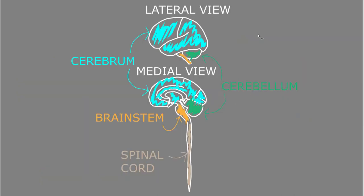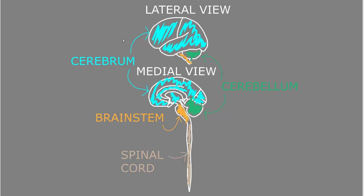The brain is divided into three main parts: the cerebrum, the brainstem, and the cerebellum. Looking at the brain in a lateral view, the cerebrum is the main, largest part on top. Under it is the brainstem anteriorly and the cerebellum posteriorly. This can be seen even better in a medial view — again, the cerebrum is the largest part on top, under that is the brainstem in the front and the cerebellum in the back.